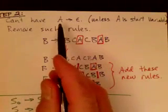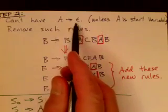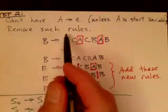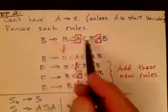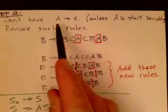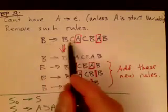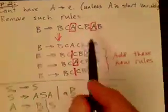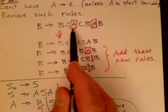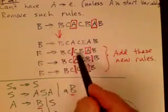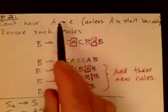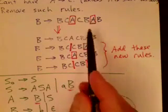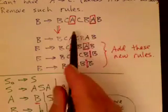A Chomsky normal form grammar can't have a rule where a non-terminal goes to epsilon, unless that non-terminal is the start variable. So in step two we remove those rules. For example, if we have a rule A goes to epsilon and another rule uses A in two places — say R goes to BCACBA B — we rewrite it into four rules covering all combinations: A present in both positions, first A gone to epsilon, second A gone to epsilon, or both gone to epsilon.